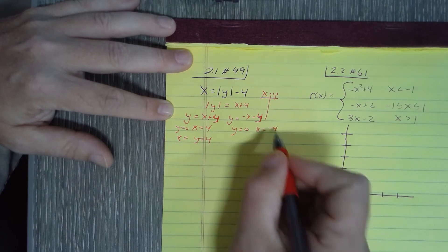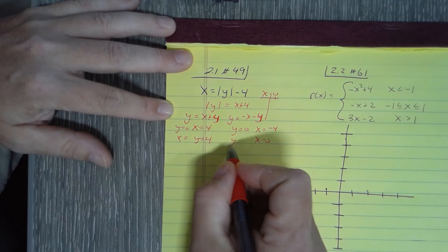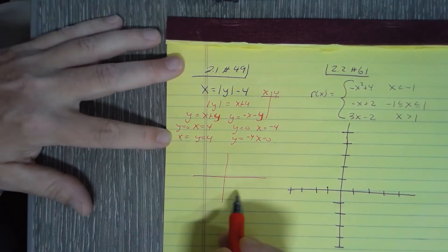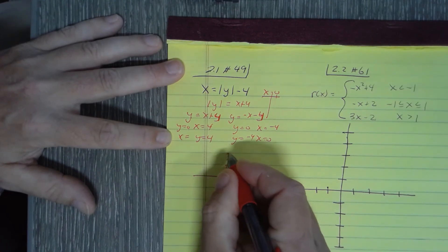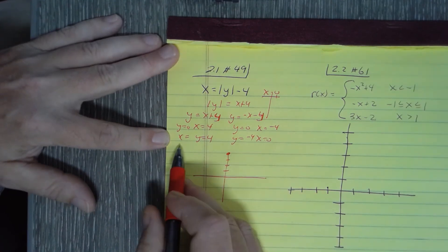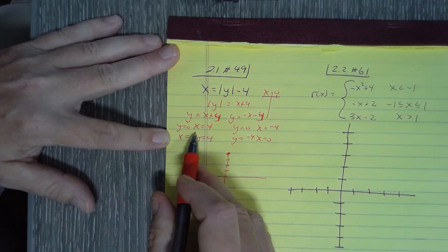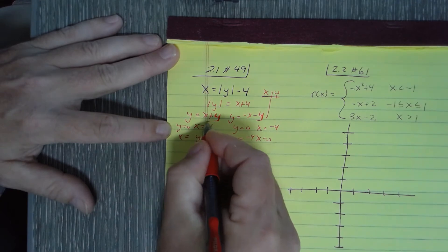Over here when y equals zero, x is going to be negative 4. And when x equals zero, y is going to be negative 4. If I look at this graph, I've got... oops I'm sorry, I've got (4, 0). That should be a negative 4.